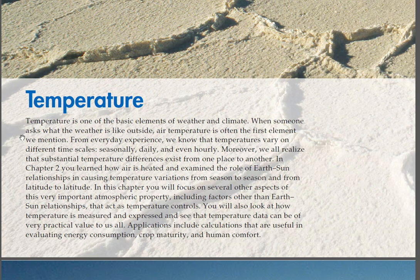From everyday experience, we know that temperatures vary on different time scales — seasonally, daily, and even hourly. Moreover, we all realize that substantial temperature differences exist from one place to another. In Chapter 2 you learned how air is heated and examined the role of Earth-Sun relationships in causing temperature variations from season to season and from latitude to latitude.